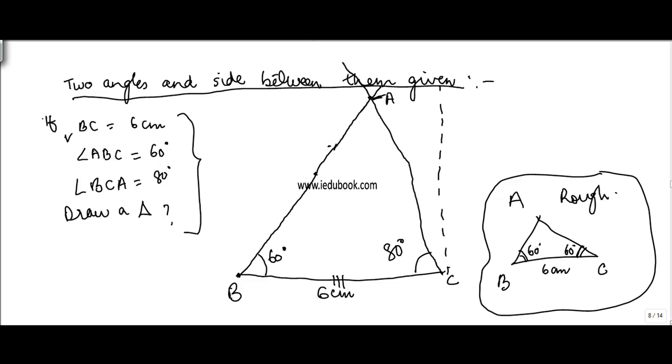So that's how you construct a triangle when two of the angles and the side between them is given.